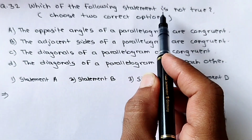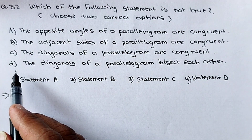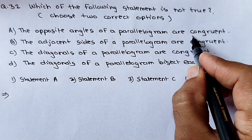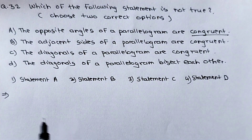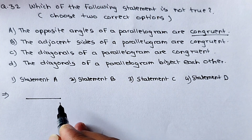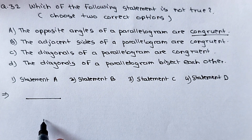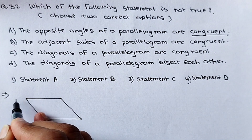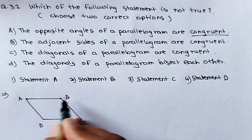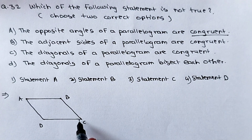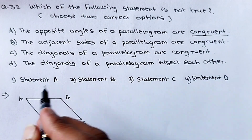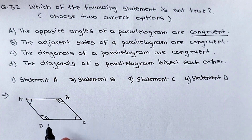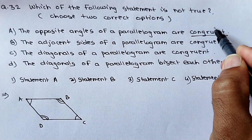See question number 32: which of the following statements is not true? Choose two correct options. The first statement: the opposite angles of a parallelogram are congruent — congruent means exactly the same size and shape. In a parallelogram ABCD, opposite sides AB is parallel to DC, and AD is parallel to BC. The opposite angles A and C are equal, and angles B and D are equal. So the first statement is true.